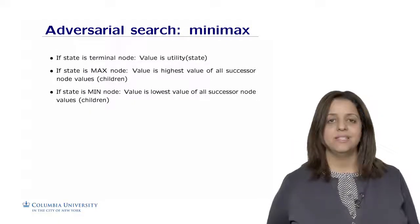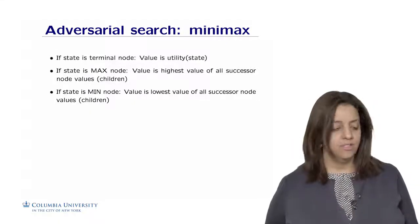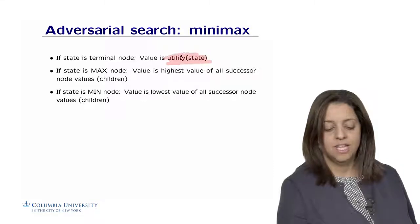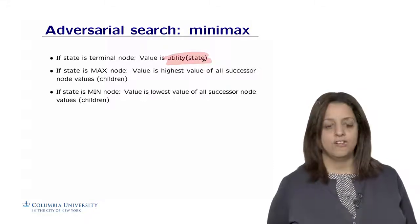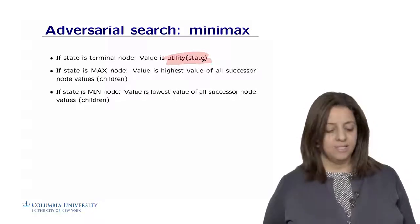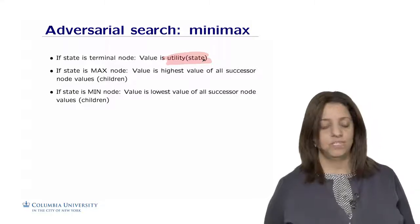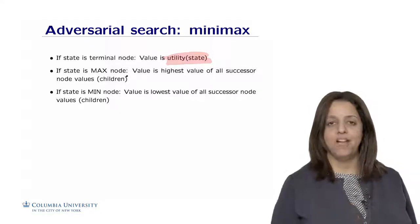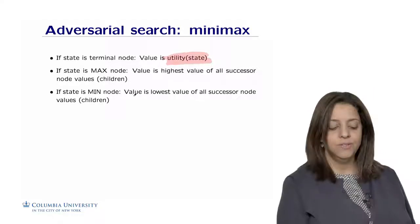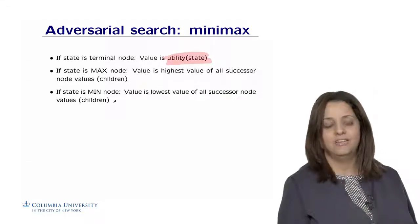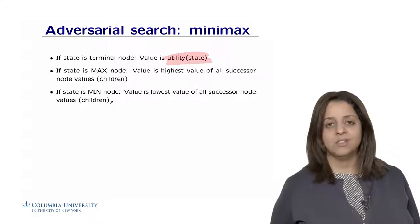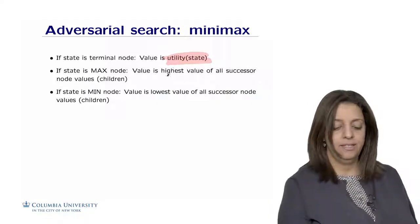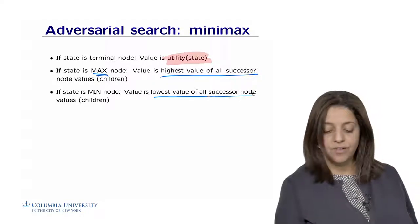The minimax idea can be summarized with these if statements. If the state is a terminal node, we uncover the utility of the state, the number depending on whether the state favors Max. If the state is a Max node, the value is the highest value of all successors, calling minimax recursively to get the maximum along that path. If the state is a Min node, we reach for the lowest value of all successor nodes, the children's values. Max maximizes the objective function, Min minimizes it. That's why we get the highest value for Max and lowest for Min.